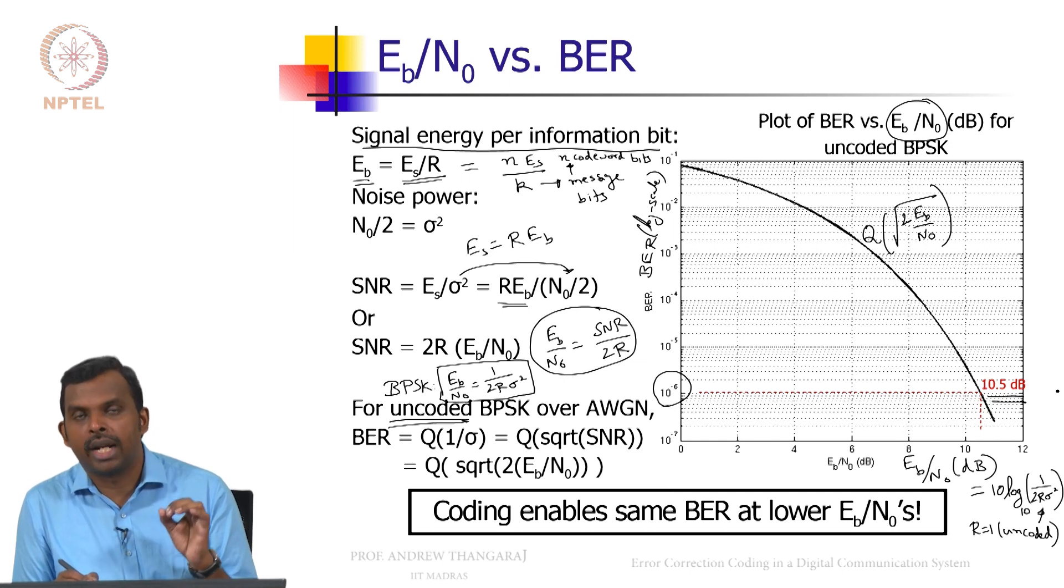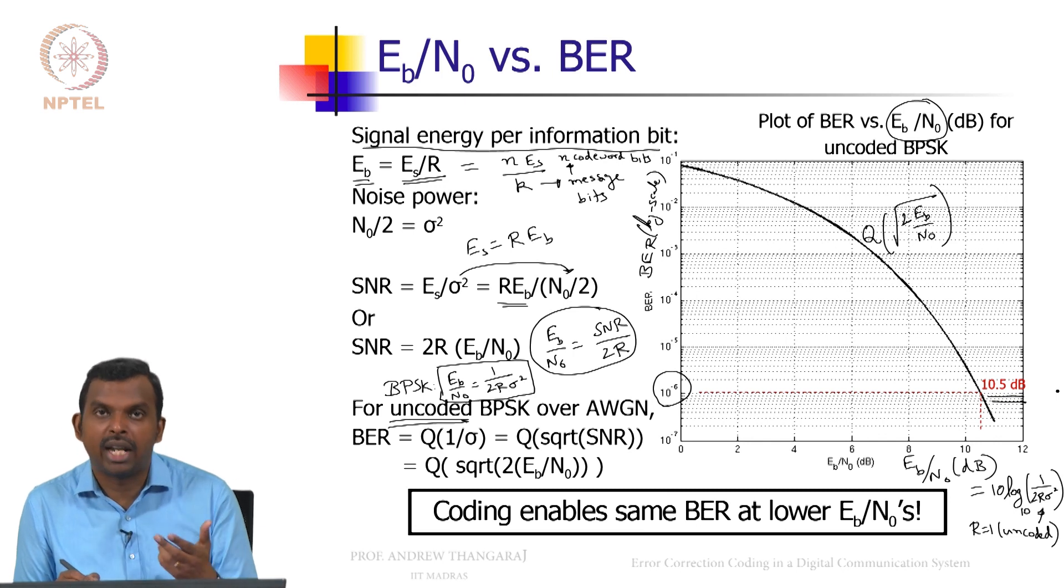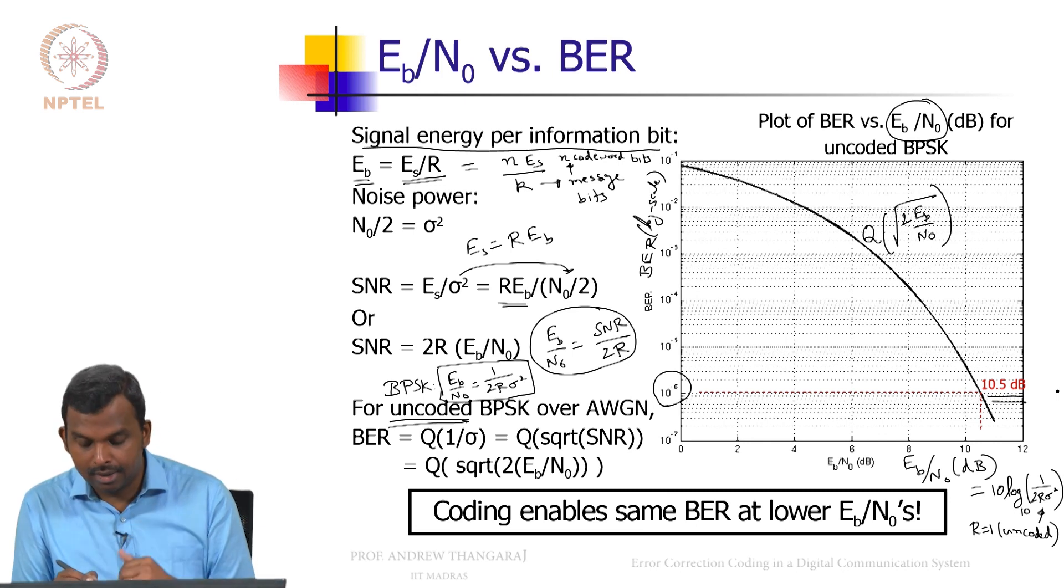So if you want a bit error rate of 10 power minus 6 with uncoded BPSK, you need an Eb over N0 of 10 dB or so, 10.5 dB. So that means roughly signal energy is 10 times the noise energy. 10 dB is the same as factor of 10. So that is the conversion that you have here.